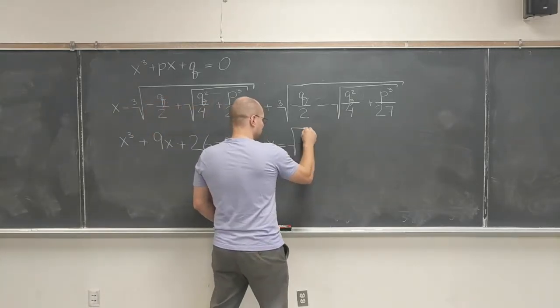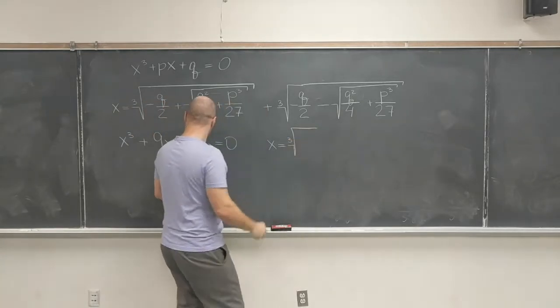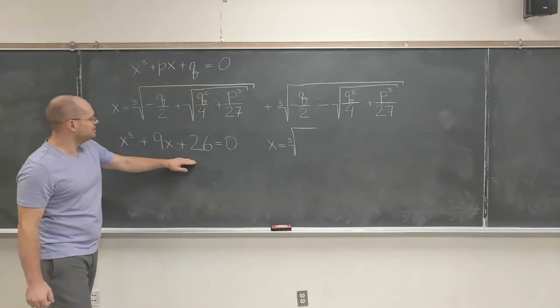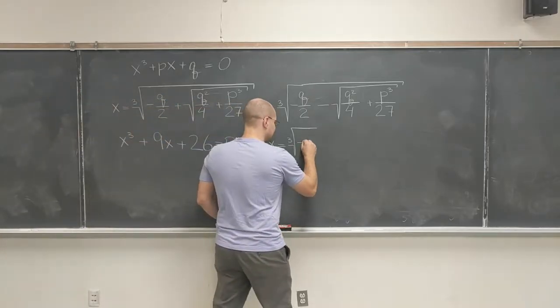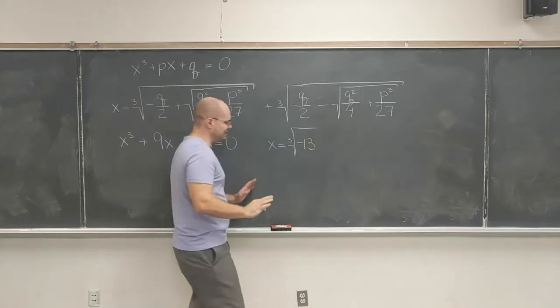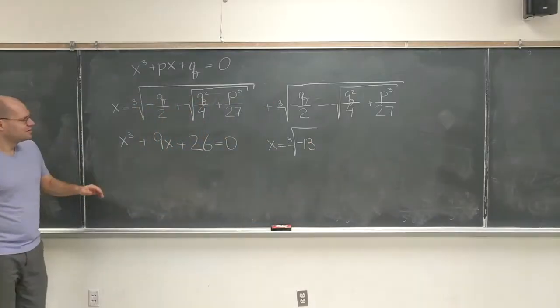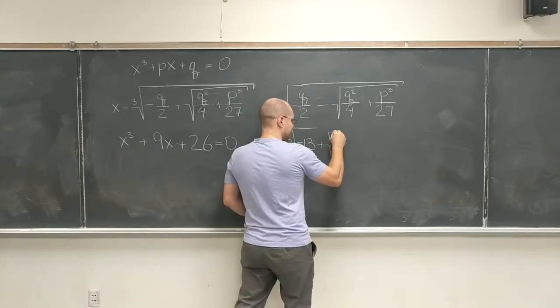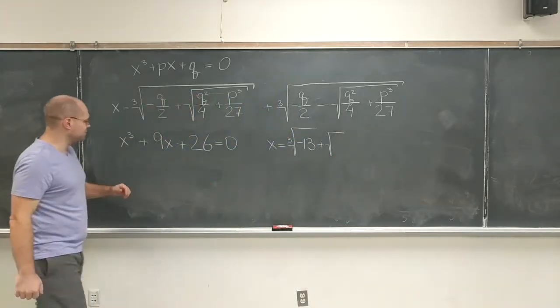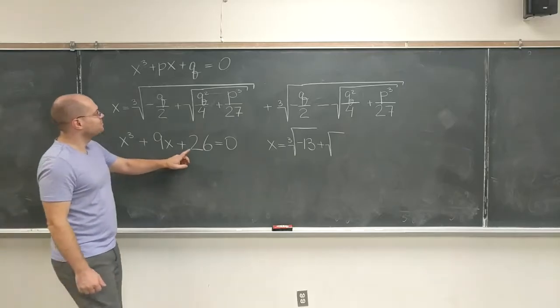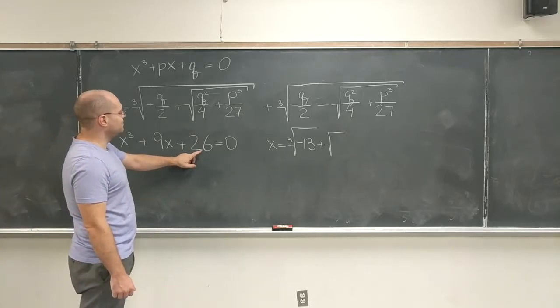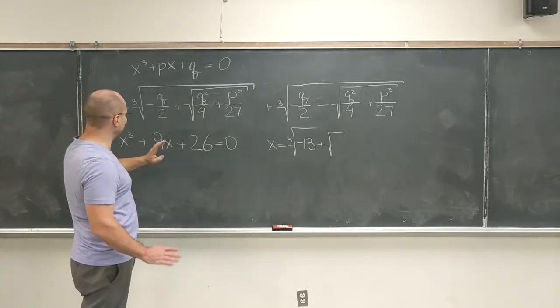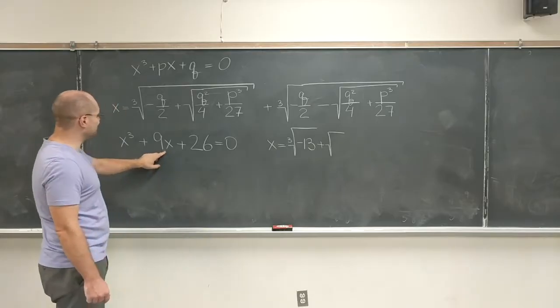So we'll have cubic root of negative Q over 2, so negative 13. Now I'm a little nervous about that negative 13. Hopefully it works out. Plus the square root. Trust your preparation. Let's see. It's going to be... Okay. Keep your P's and Q's straight. More important than ever.